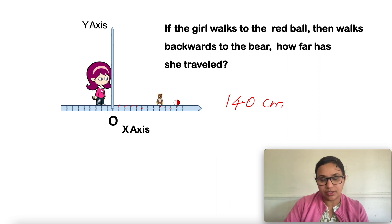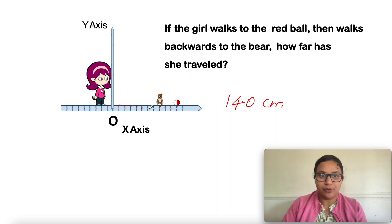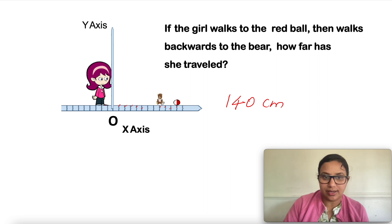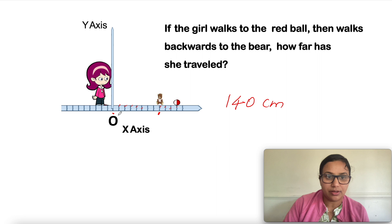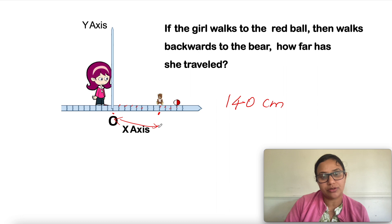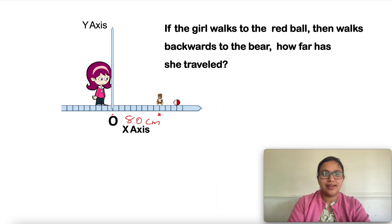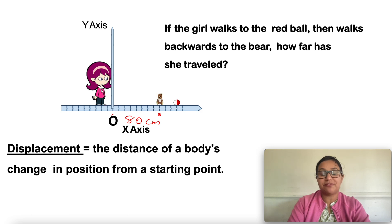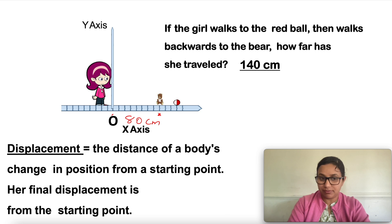From this example, can you find the distance of the final position — the bear — from the initial position O? This difference gives you the numerical value of the displacement of the object from its initial point to the final point. Counting from the initial position O to the final position at the bear: 1, 2, 3, 4, 5, 6, 7, 8 — that is 80 centimeters. So displacement is the change in position from a starting point. The total distance traveled is 140 centimeters, but her displacement from the starting point is 80 centimeters.